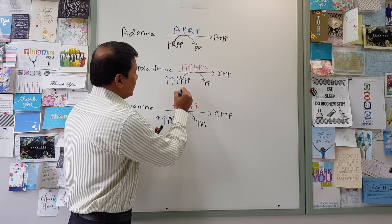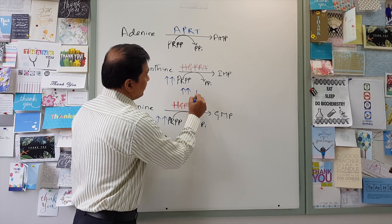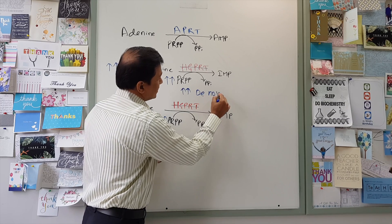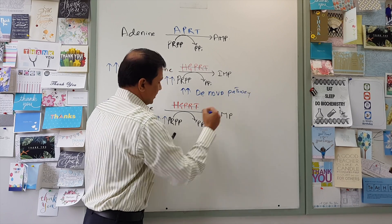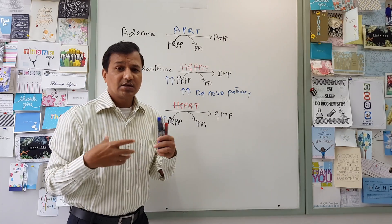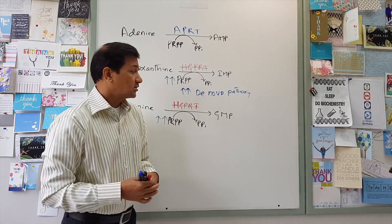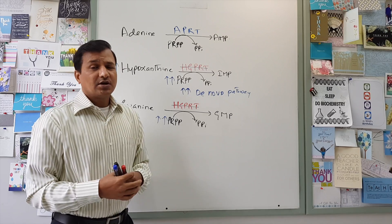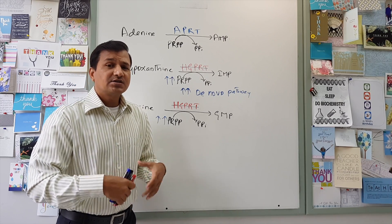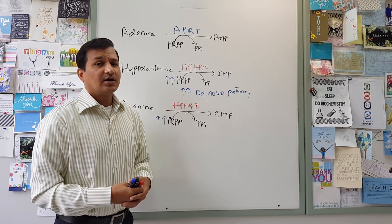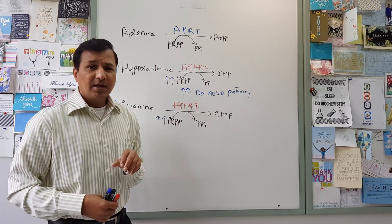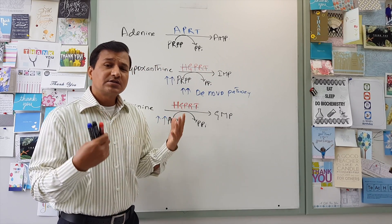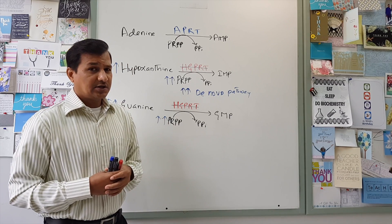Because of this, what happens is there is an increased de novo pathway. The de novo pathway is increased. And thereby, you know the de novo pathway involves so many reactions, around 11 to 13 reactions are there, and a lot of ATPs are needed.